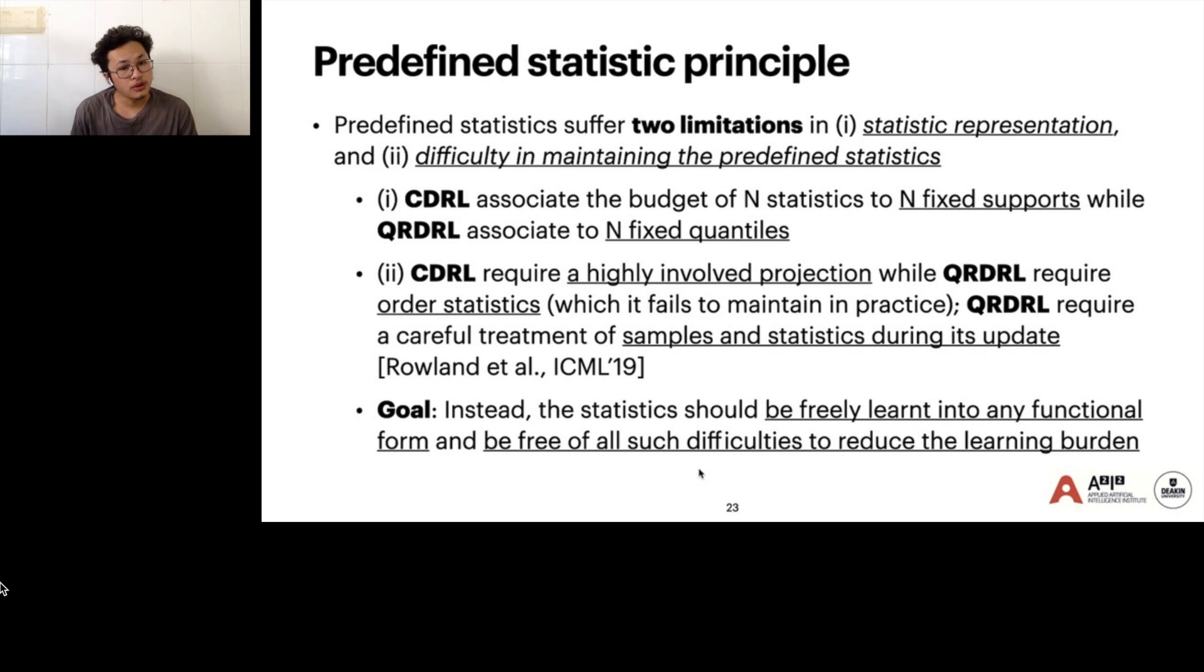The predefined statistics principle suffers two limitations in practice. First is statistic representation constraint, and second is difficulty in maintaining the predefined statistics. For example, CDRL is associated with budget and sensitive to N fixed supports, while QRDRL is associated to N fixed quantiles. CDRL requires a highly involved projection. QRDRL requires order statistics. In practice, QRDRL fails to maintain the order statistics. The goal is, in fact, we propose that the statistics should be freely learned into any functional form, be free of all these difficulties to reduce the learning burden.